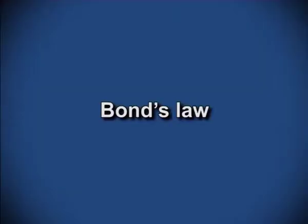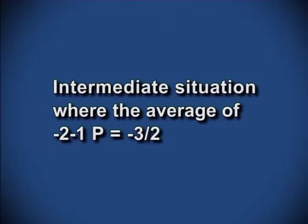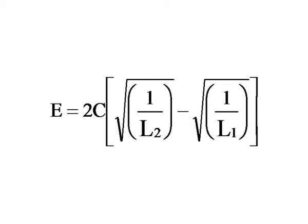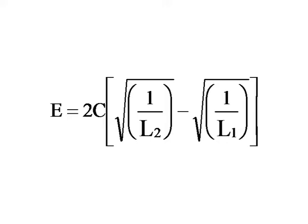Bond's law proposes an intermediate situation where the average of −2 and −1 is taken as −3/2 as the exponent. So dE/dL = −C·L^(−3/2). On integration, it gives E = constant × (√(1/L2) − √(1/L1)). Now let us look at the equipment for size reduction.